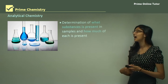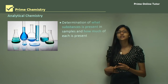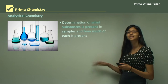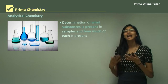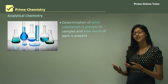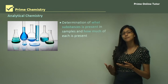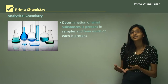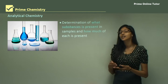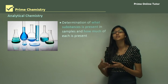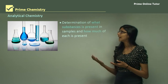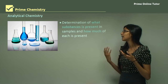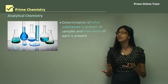First, we have analytical chemistry. This involves determination of what substances are present in a sample and how much of each substance is present. For example, if you are conducting a reaction, you want to know how much reactant you're using so that the amount of product formed is useful. Therefore, analytical chemists look at the quantity of reactants involved in a reaction.